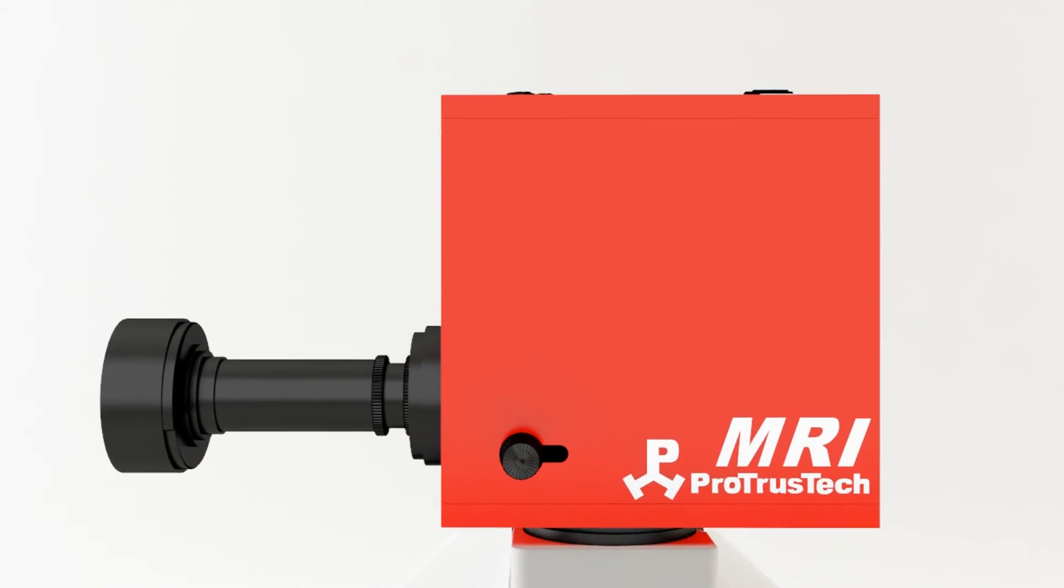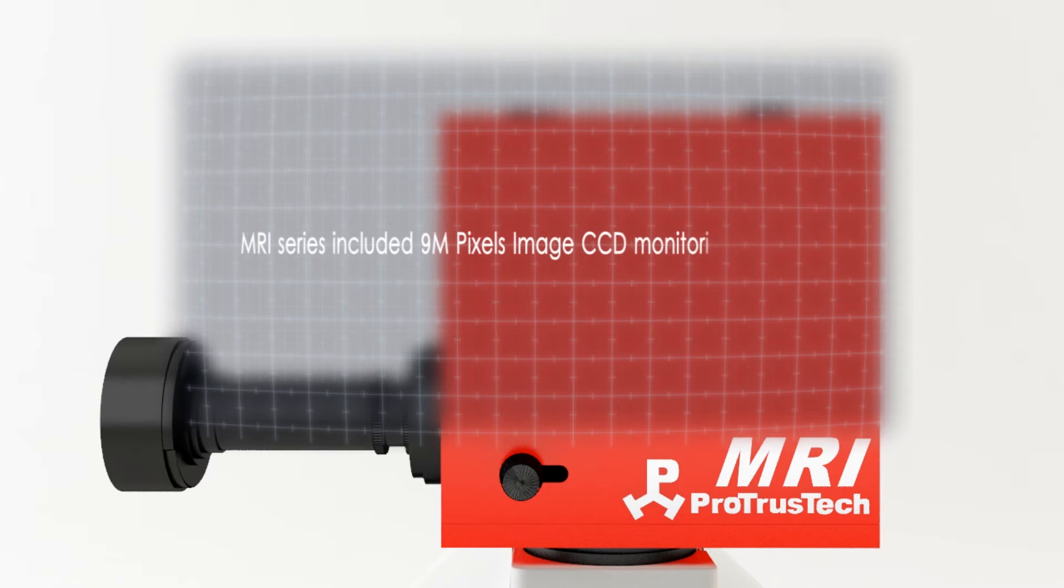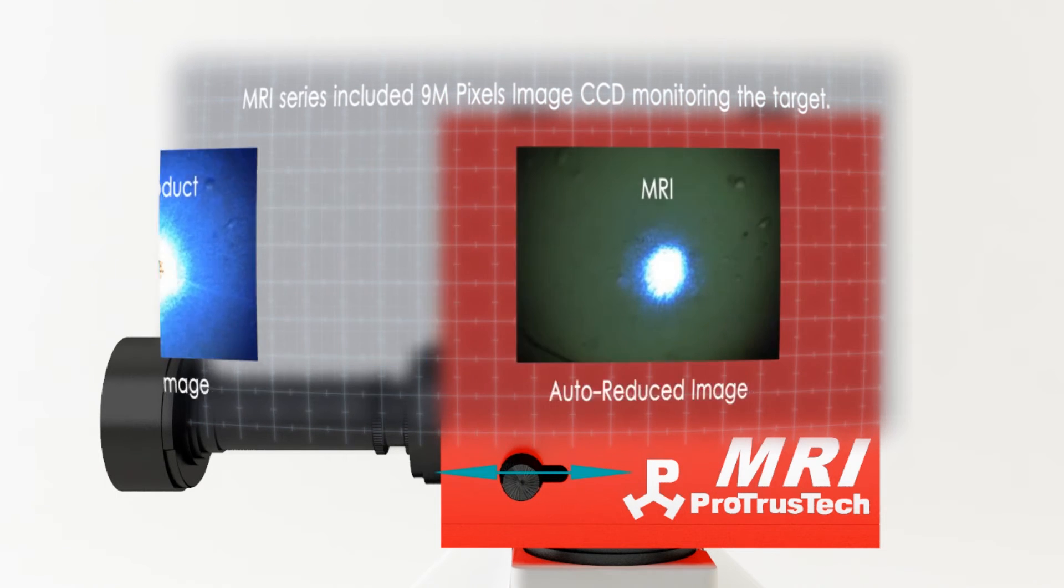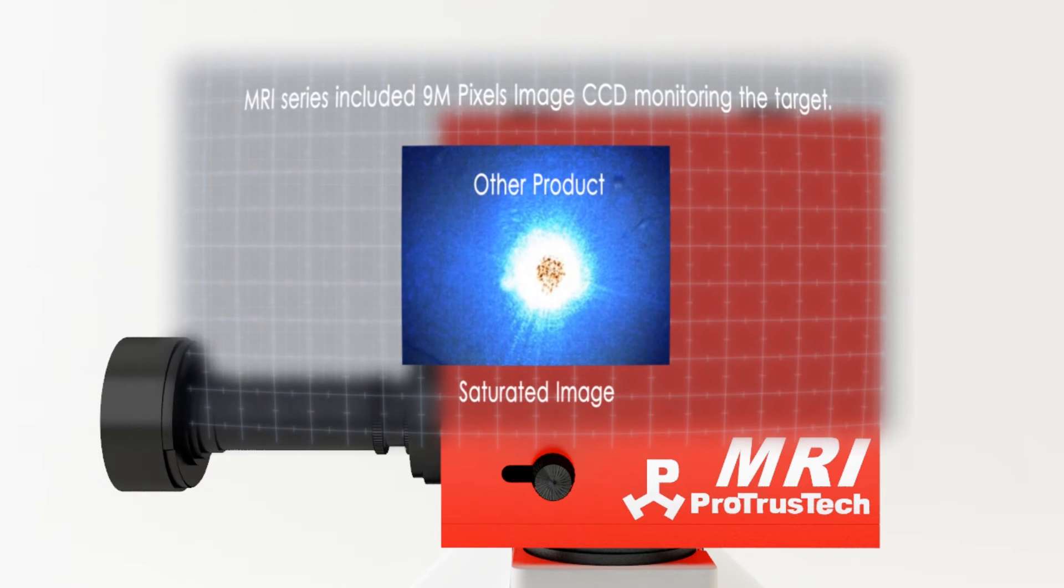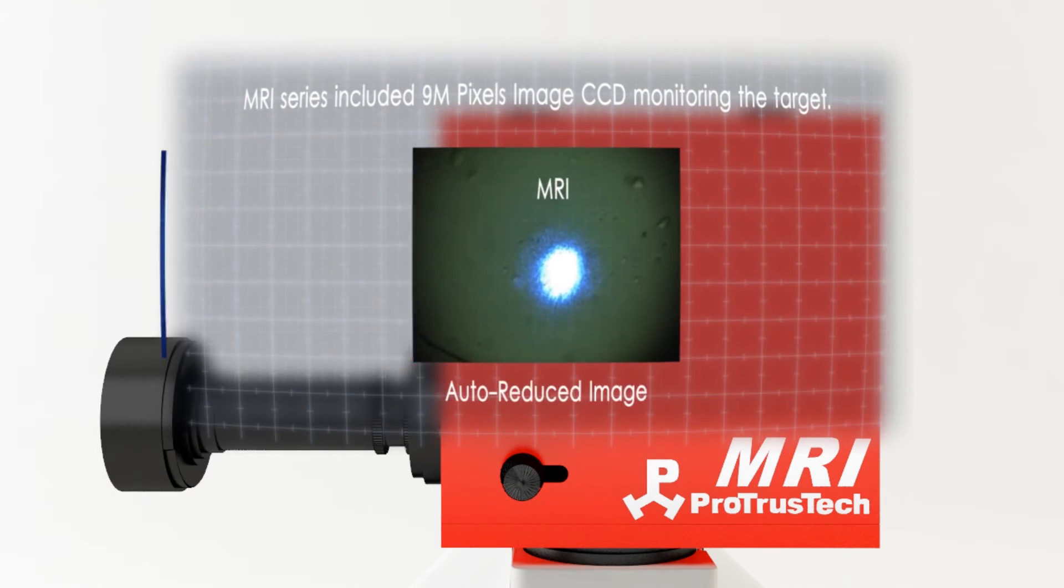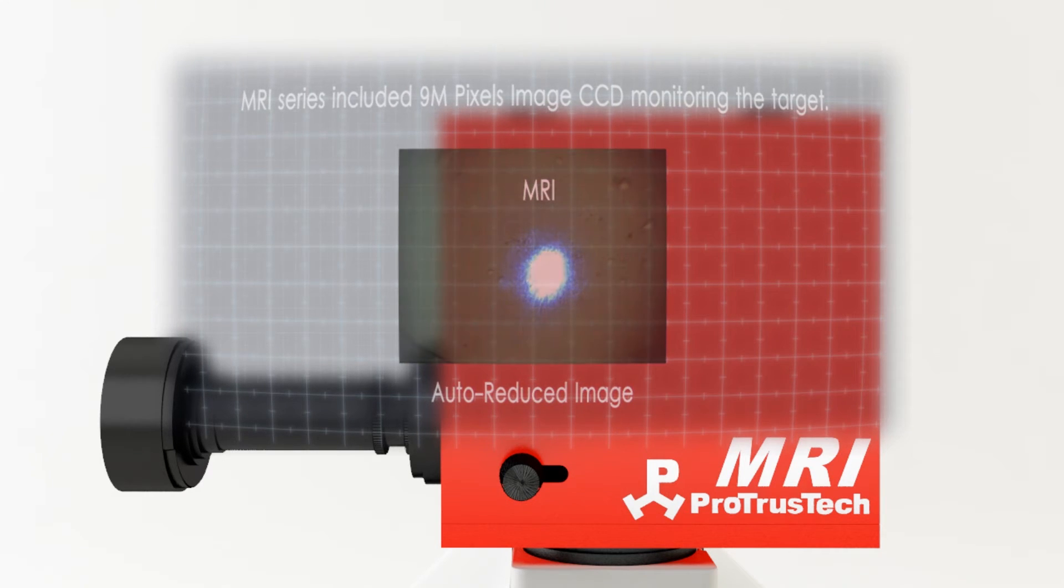MRI is equipped with a 9 million pixel CCD camera, allowing you to clearly capture microscopic sample images. Moreover, our MRI carries with itself a built-in laser goggle function which, when switching to image mode, will automatically adjust laser power to minimum amount, preventing images from overexposure.